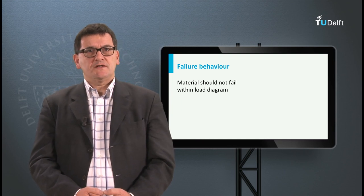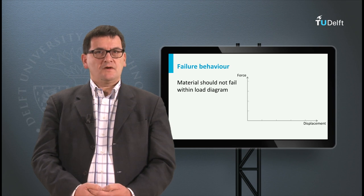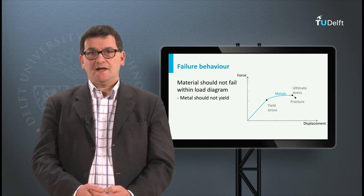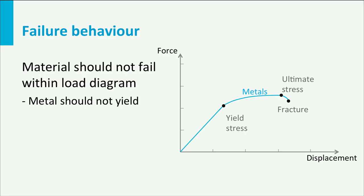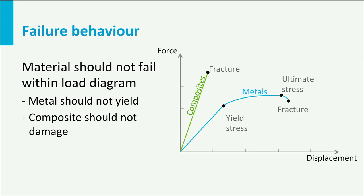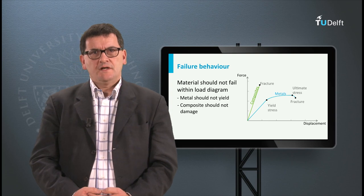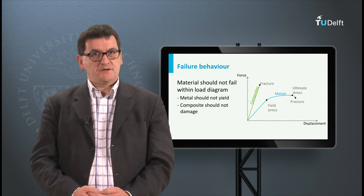The load diagram and these definitions can also be related to the different materials used in aircraft. If we look at the force-displacement curve of a metal alloy, we can see that the material shows elastic and plastic behavior. Up to the yield stress the material behaves elastically and all deformations are reversible. Beyond the yield point the material becomes plastic and deformations are permanent and irreversible. The limit load should therefore be below the yield point, and the ultimate load should be below the maximum load. For composites, which are elastic until failure, the ultimate load should be below the failure load. Currently, the safety factors used for composites are higher than for metal alloys, since the fracture loads of composites show more scatter.